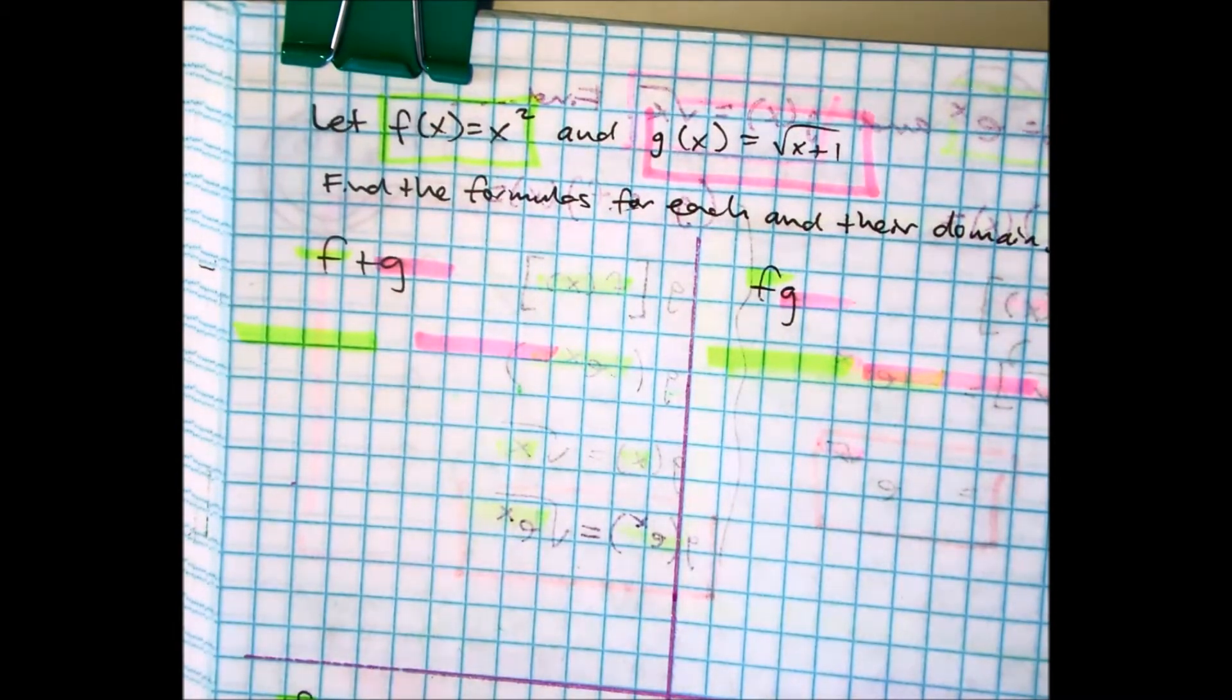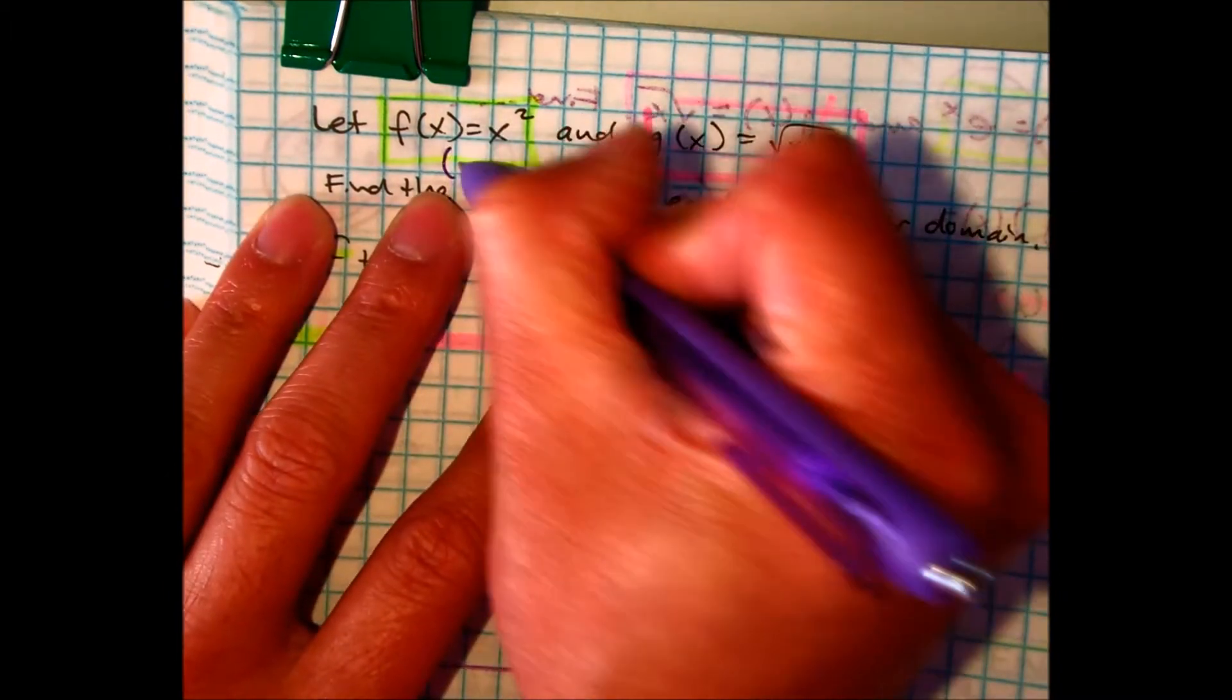Ryan, the domain for the yellow is... Lisbel, the domain for the yellow is... Is it negative infinity, comma, positive infinity? Yes.